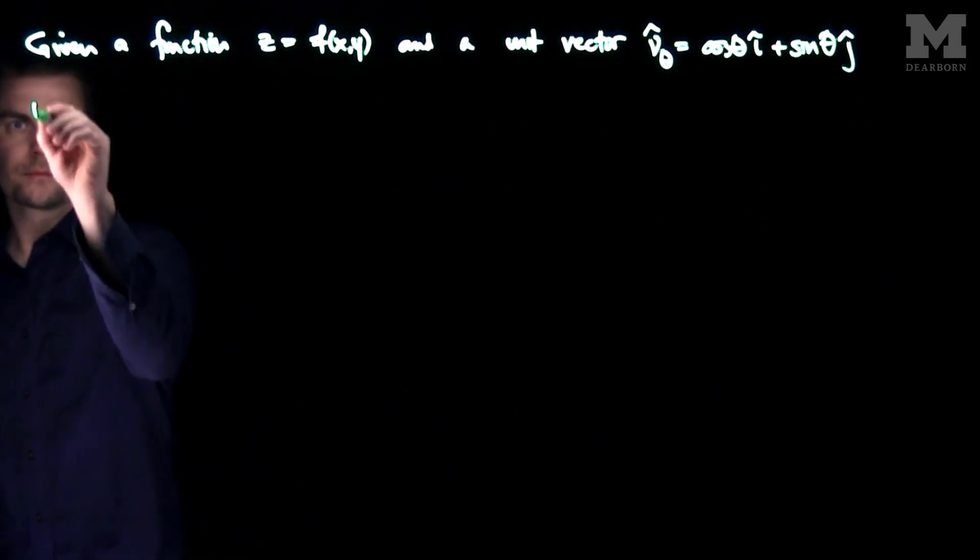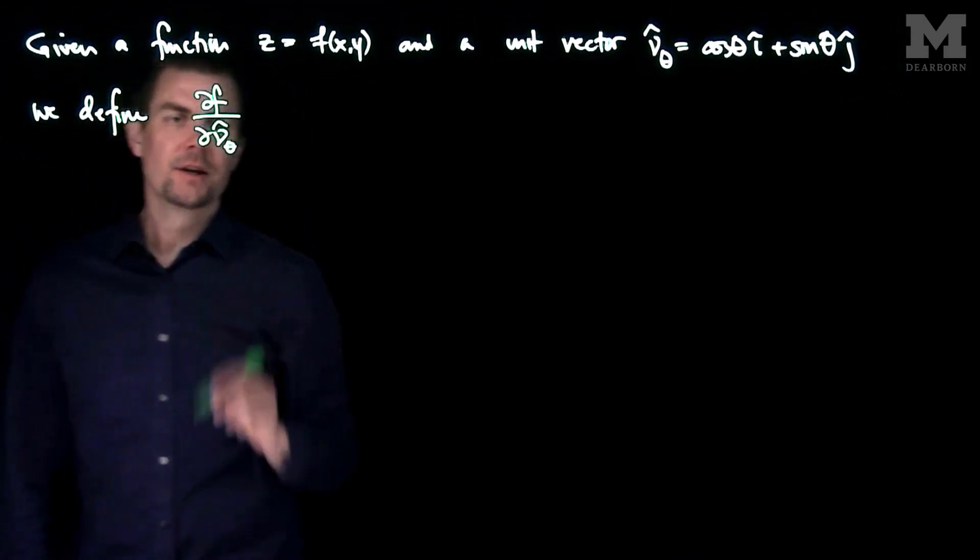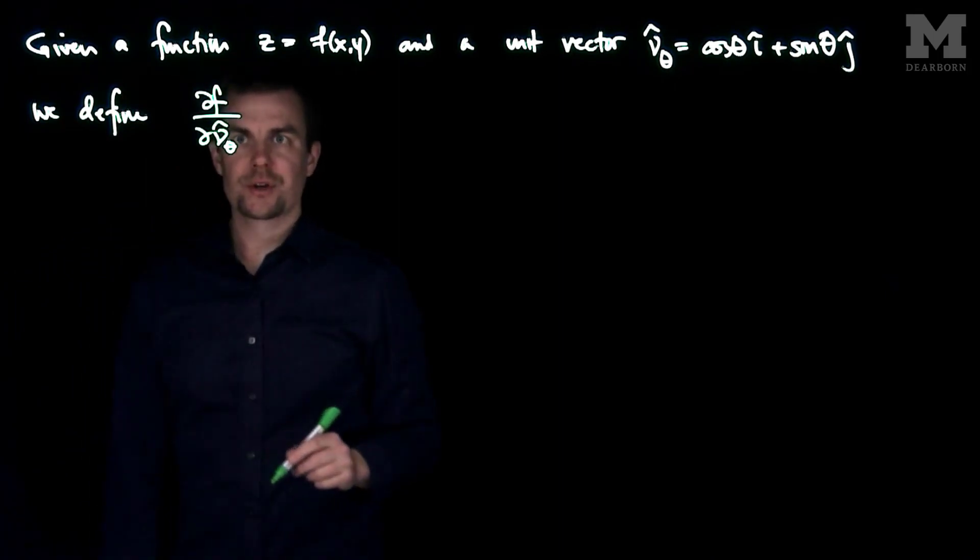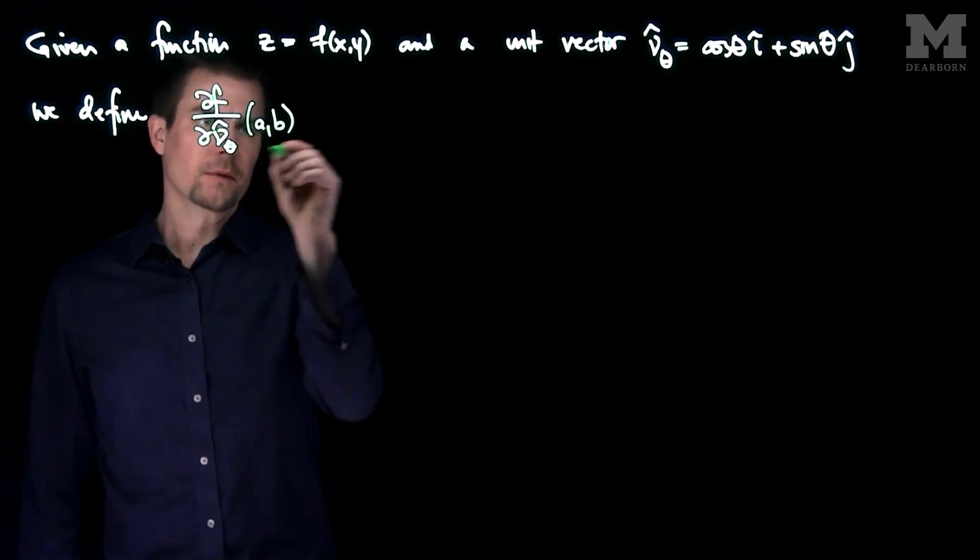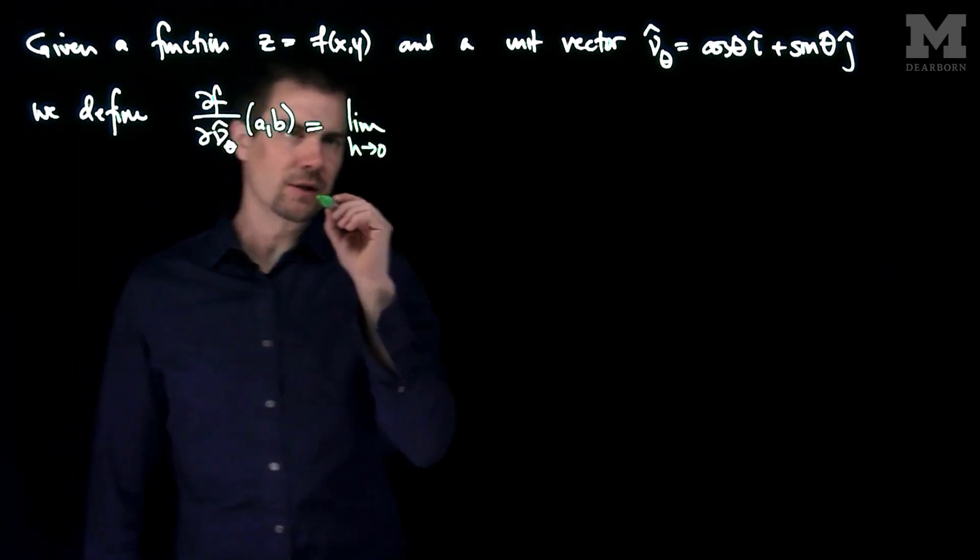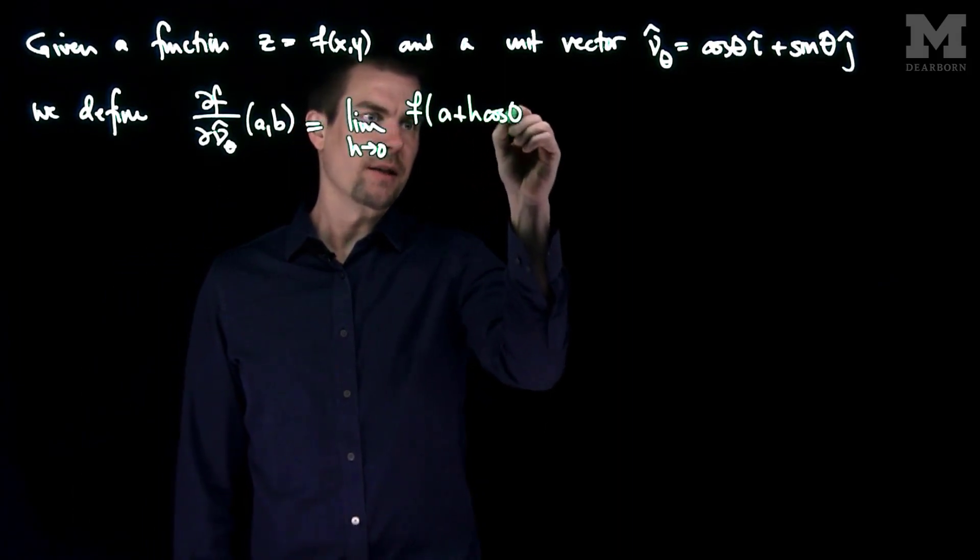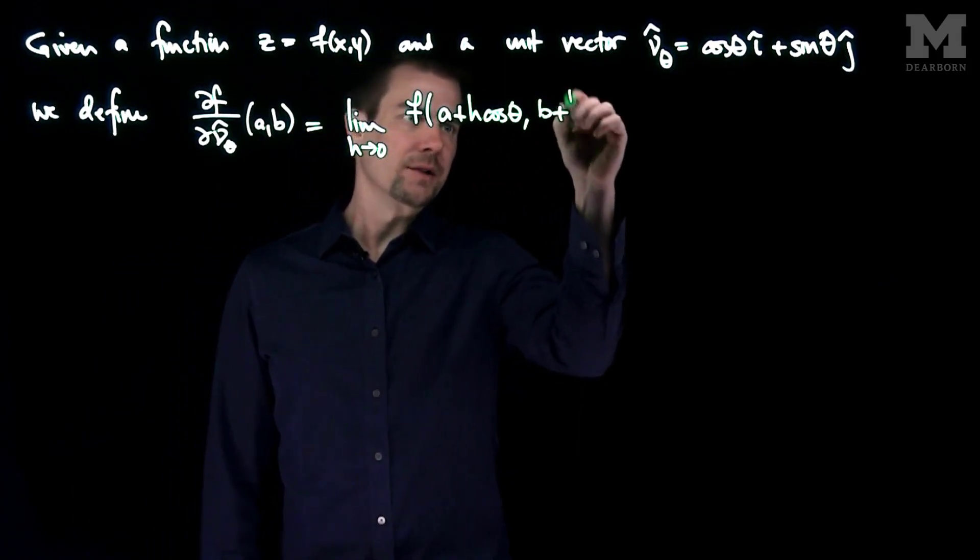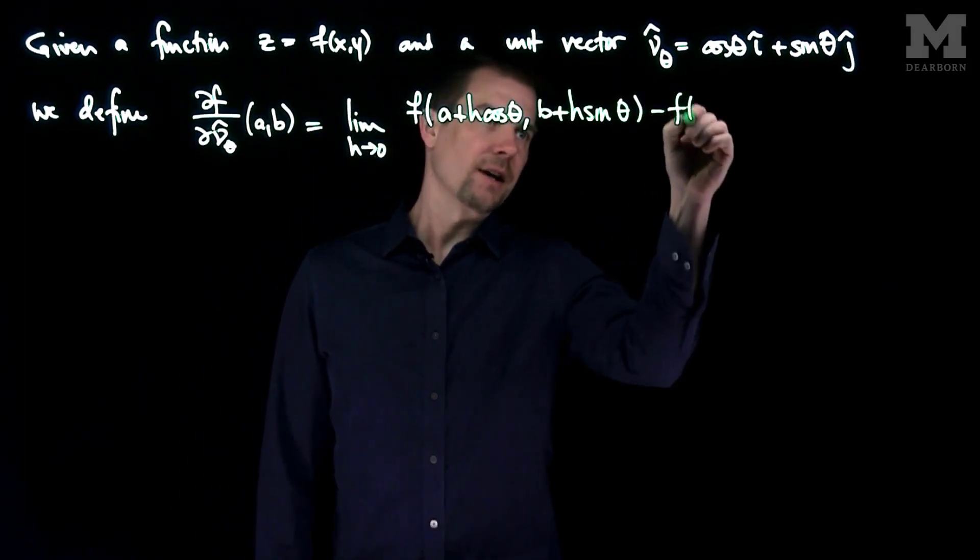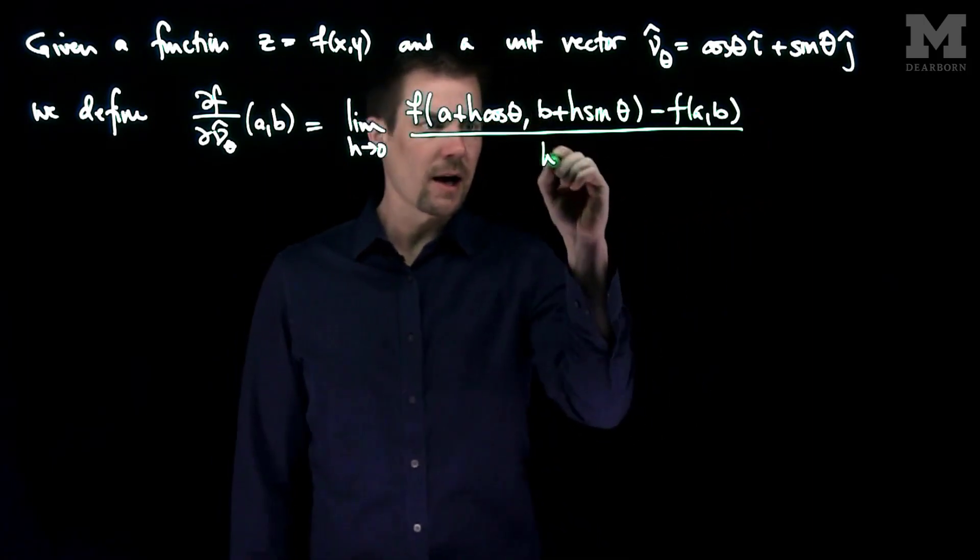we define partial f partial nu theta hat, the directional derivative in the direction of theta at a point ab, to be the limit as h approaches zero of f of a plus h cosine theta, b plus h sine theta, minus f of ab, all divided by h.